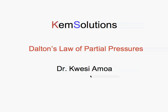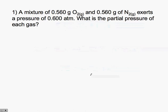Take a look at Dalton's law of partial pressure. The first question we have here is: a mixture of 0.56 grams of oxygen and 0.56 grams of nitrogen exerts a pressure of 0.600 atmospheres. What is the partial pressure of each gas?